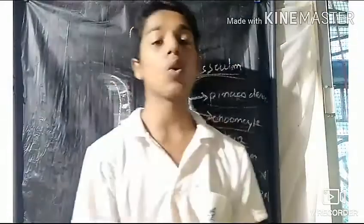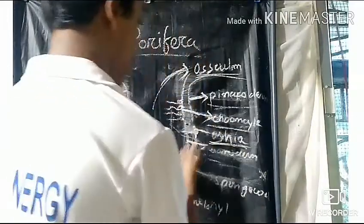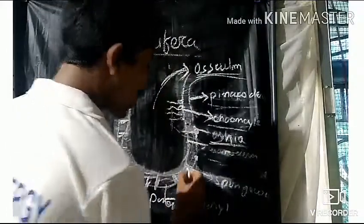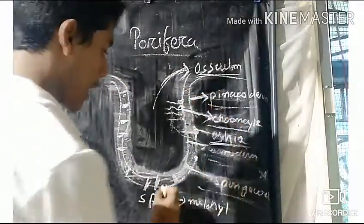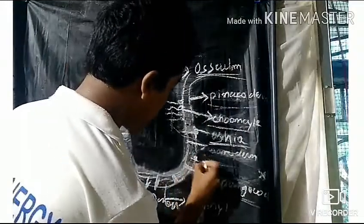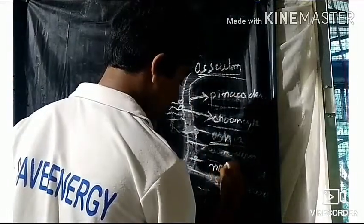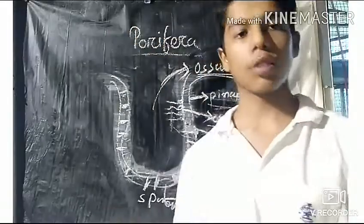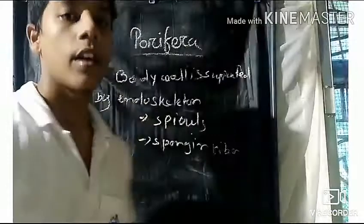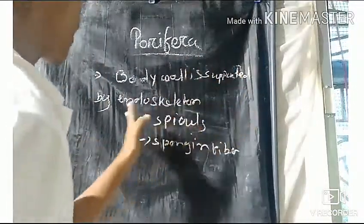This canal system is used for respiration and excretion. The central cavity is called the spongocoel. The body wall is supported by an endoskeleton.